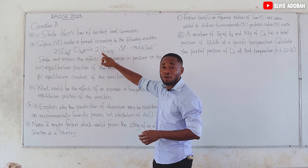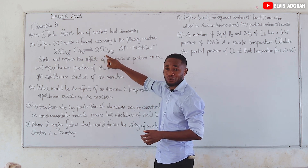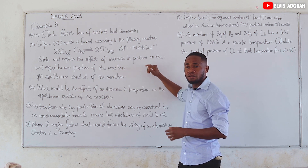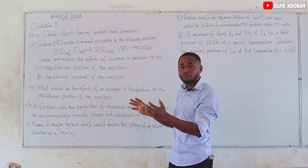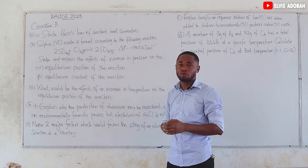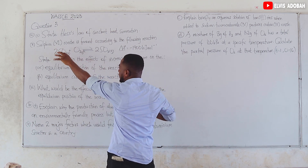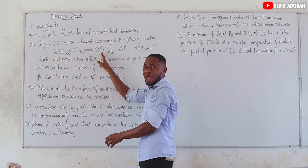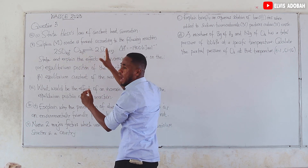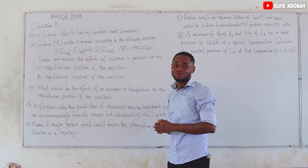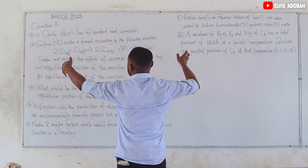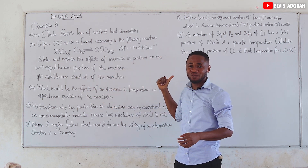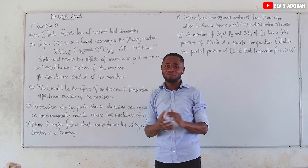At the product side, there are 2 moles of SO₃. According to Le Chatelier's principle, when pressure increases, the equilibrium shifts to the side with fewer moles of gas. Since the product side has 2 moles (less than 3 on the reactant side), the equilibrium position shifts to the right — towards the products.